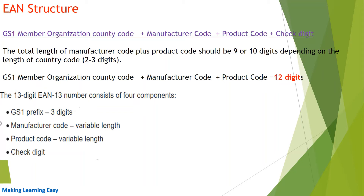For example, if the country code is two digits and the manufacturer code is seven digits, then the product code would be three digits. If the country code is two digits and the manufacturer code is five digits, then the product code would be five digits. All three together should be 12 digits. The manufacturer code and product code are of variable length, and the check digit is a single digit used to verify if your EAN code is valid or not. I have attached a screenshot of a product with a barcode printed on it — you can see it is 13 digits.